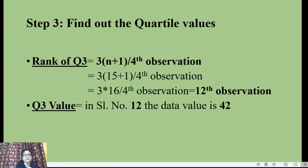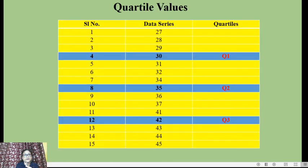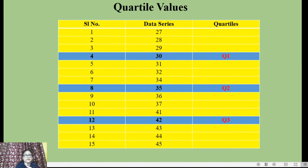In this way, we have found all three quartile values. In serial number 4, the value is 30, so Q1 = 30. In serial number 8, the value is 35, so Q2 = 35. In serial number 12, the value is 42, so Q3 = 42. We can see that these three values divide the series into four equal parts. Thus, the quartile values are those values which divide a given data series into four equal parts. All quartile values have been found.